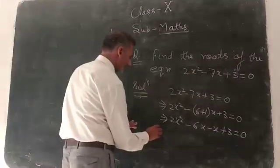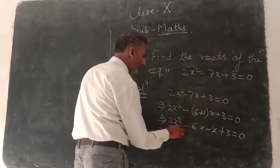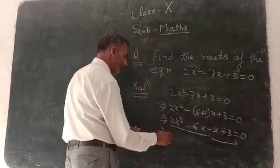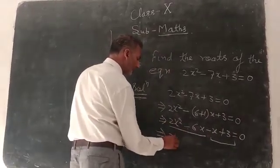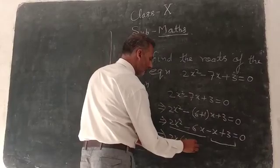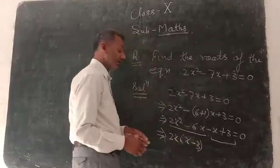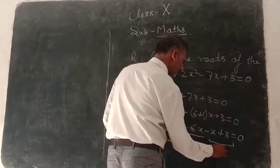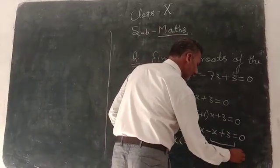Now, take the common. Here the common, 2x times x minus 3, here the common, minus 1 times x minus 3, equal 0.